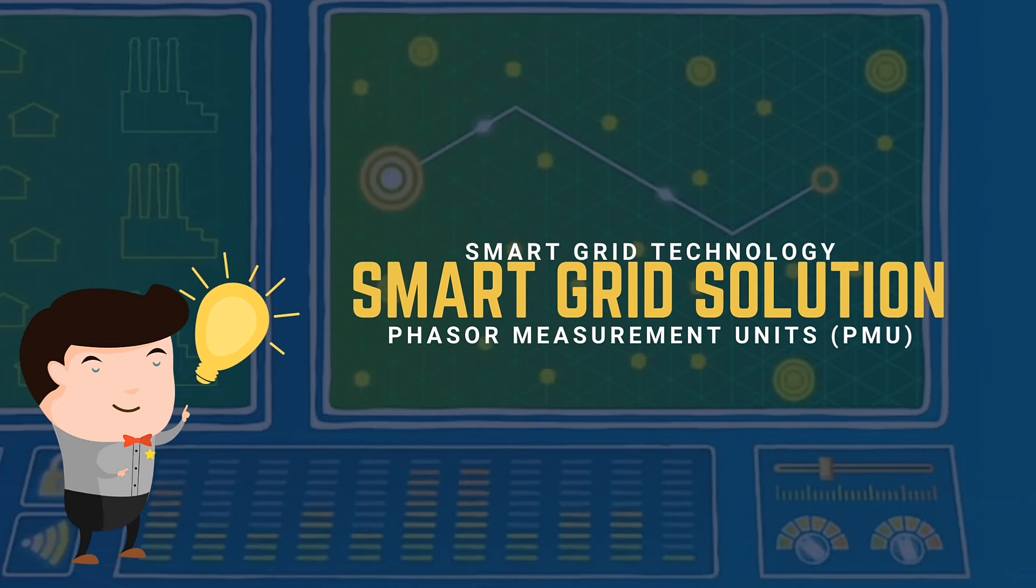The smart grid will help solve this problem by adding new capabilities for measurement and control of the transmission system. These technologies will make the grid much more reliable and will minimize the possibility of widespread power interruption.